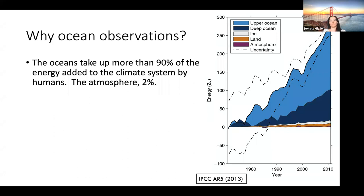For comparison, the atmosphere takes up 2%. You may have seen this schematic from the IPCC report, where on the horizontal axis you have the year, and on the vertical axis you have the energy. This graph shows how the energy stored in different components of the climate system has changed over time. You can see prominently how most of the energy has been stored in the upper ocean portion — shown in light and dark blue shading.